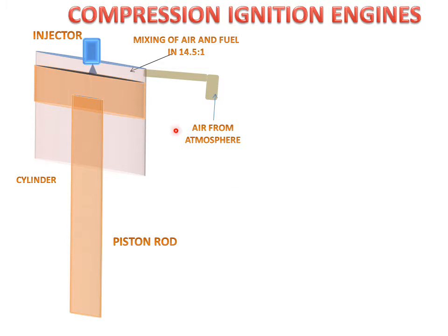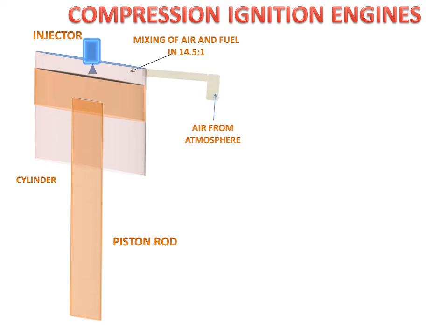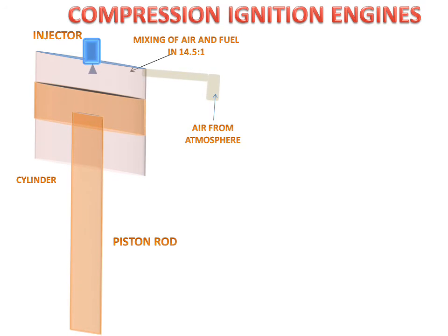The injector injects the fuel, and the air-to-fuel mixing ratio in the cylinder is 14.5:1, which is the stoichiometric mixture. The engine then starts working. This is the process of CI engine operation.